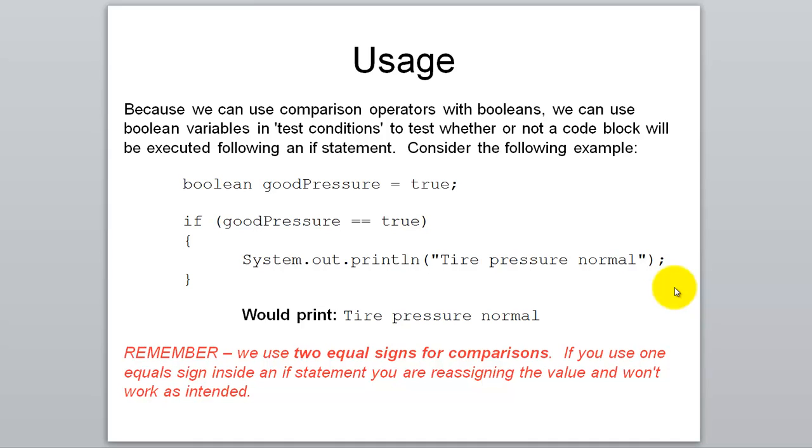Yes, it gets even more confusing than that. So here's some common usage for a Boolean. Let's declare one called good pressure, set it equal to true, and then we could throw good pressure into an if statement. If good pressure equals true, then we print tire pressure normal. So since it was equal to true, we printed tire pressure normal. Remember you have to use double equals for comparisons. Now this is actually kind of redundant because good pressure, what's the value in good pressure? It's true. So we're really saying if true equals true. Well, of course true equals true. It's kind of weird. True equals true will evaluate as true every time, right?